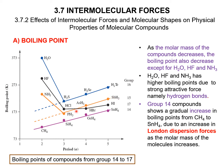The same trend applies to group 15: antimony, arsenic, and phosphorus — but not for nitrogen. For group 16: tellurium, selenium, sulfur — molar mass decreases and boiling point decreases as well. For group 17: iodine, bromine, and chlorine follow the trend, but fluorine is an exception, similar to oxygen and nitrogen.